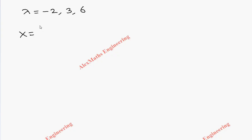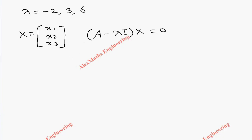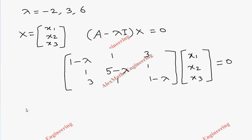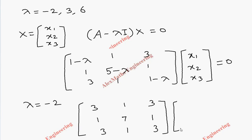Now we find the eigenvectors. We set up (A minus lambda I) times X equals 0, where X is the column vector [x1, x2, x3]. Taking the first eigenvalue lambda equals minus 2, substituting gives the matrix with entries 3, 1, 3 in the first row; 1, 7, 1 in the second; and 3, 1, 3 in the third row.